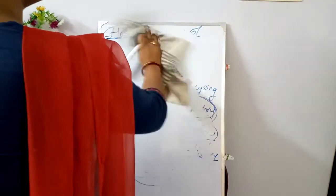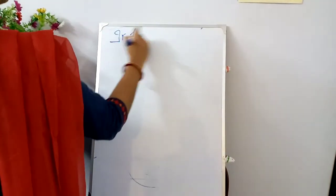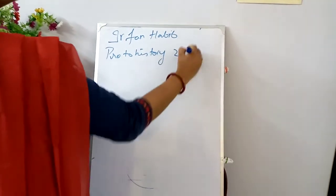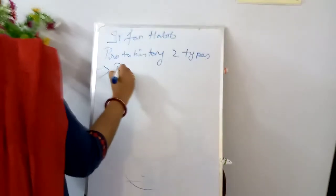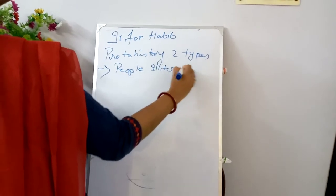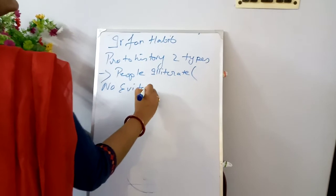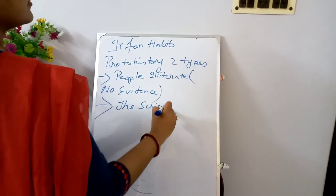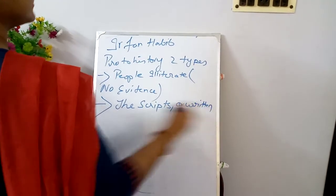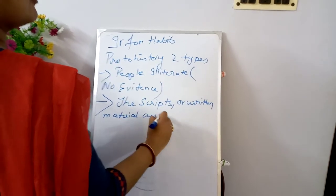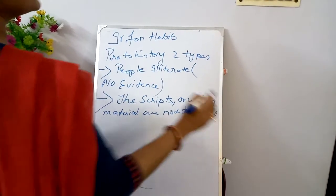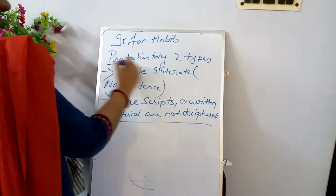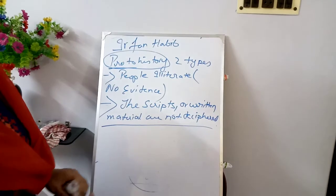Historian Irfan Habib states that proto-history is of two types. First, people may be illiterate, and that is why there is no evidence of writing. Second, there were scripts or written materials, but they have not been deciphered — meaning it is not yet understood what writing skill the people of that particular period had.